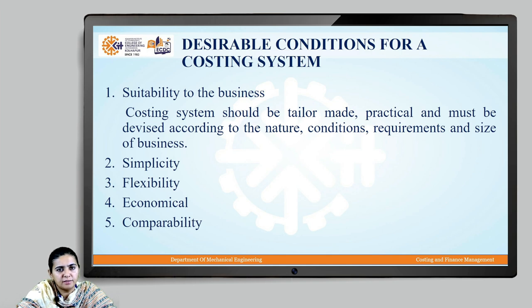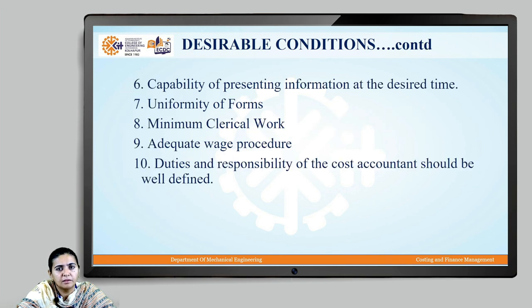The fourth important condition is that the costing system should be well adapted by the company. The next condition is comparability: it should be very easy to compare costs using the costing system, so that if a company intends to compare the cost of a particular product over time, this feature is readily available. Additionally, the costing system should be capable of presenting information at the desired time, so that whenever past data is needed, the system can present that information.